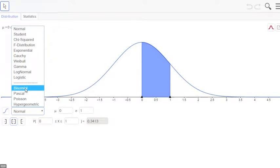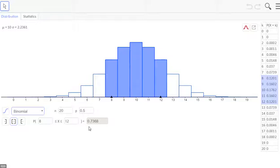When we select binomial, it's going to change the screen to these discrete cases, which is what we have. To set it up, we need to have our value for n and our value for p. Remember, n is our number of trials, and p is our probability of success.